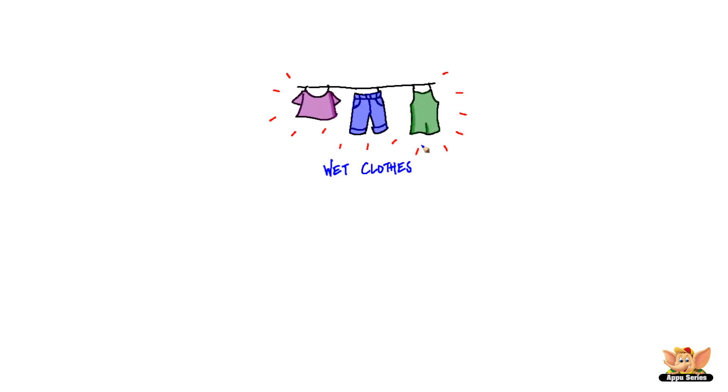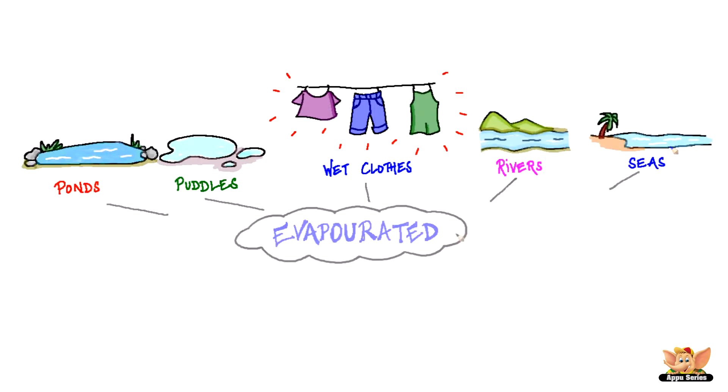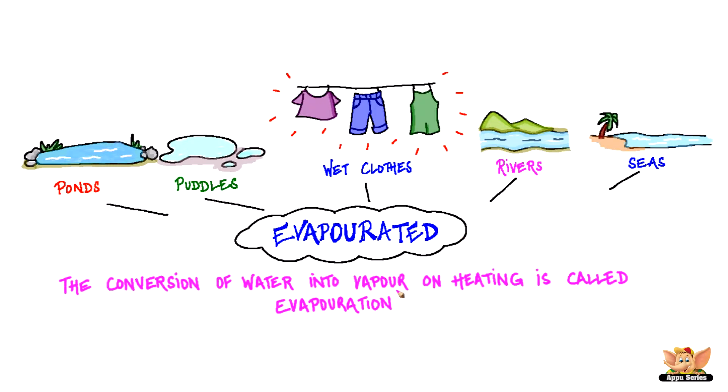Water from wet clothes, puddles, ponds, rivers and seas all gets evaporated. We've learnt about evaporation in our previous videos. So you all know that the conversion of water into vapour on heating is called evaporation. This vapour becomes a part of air that we cannot see.